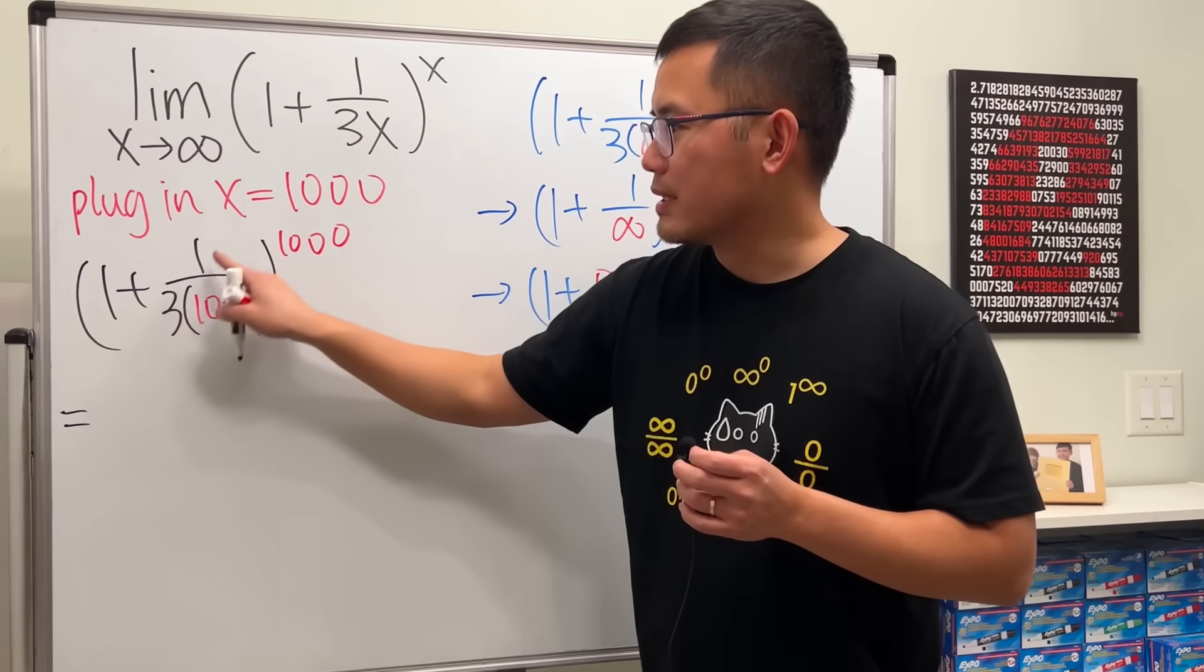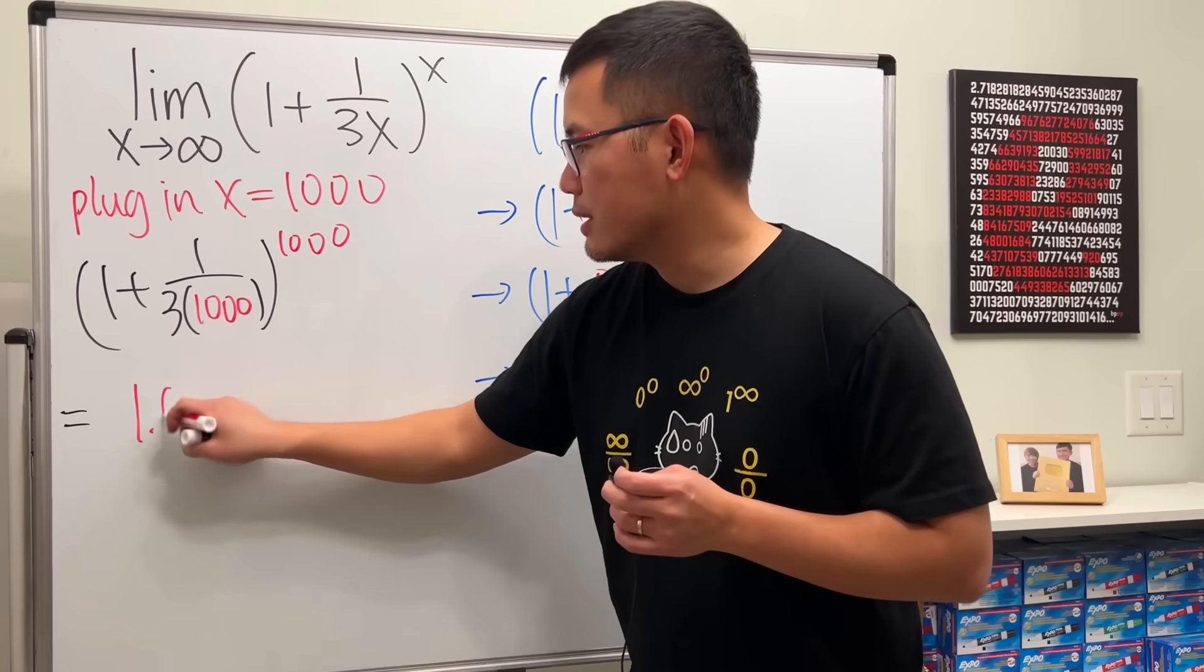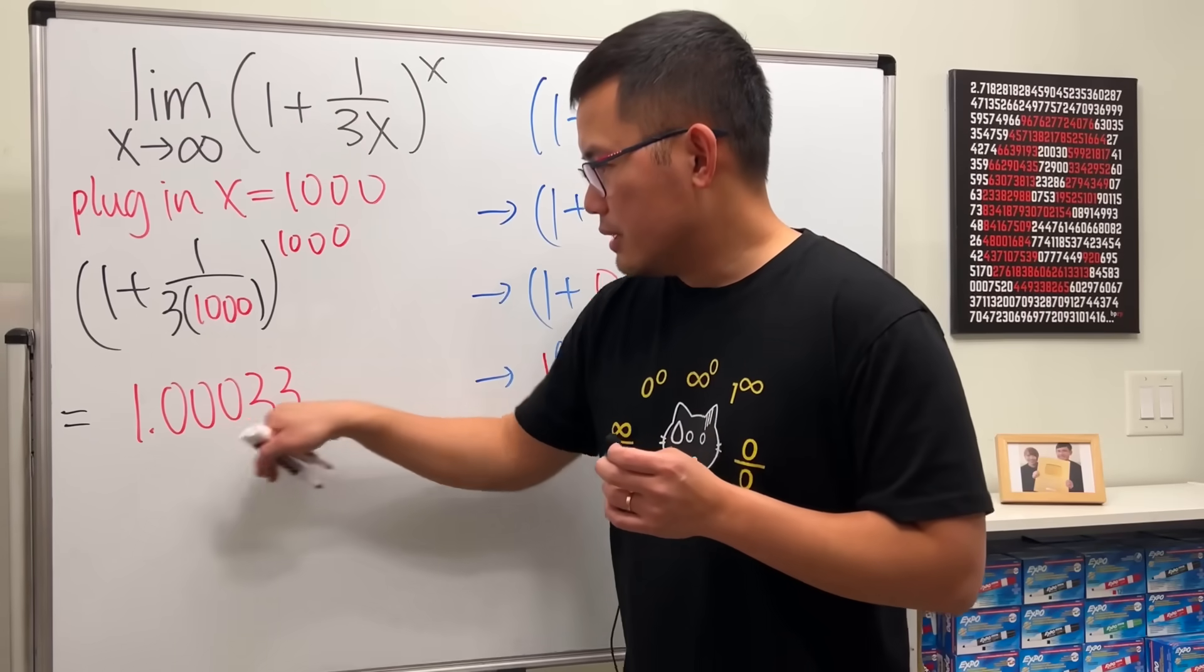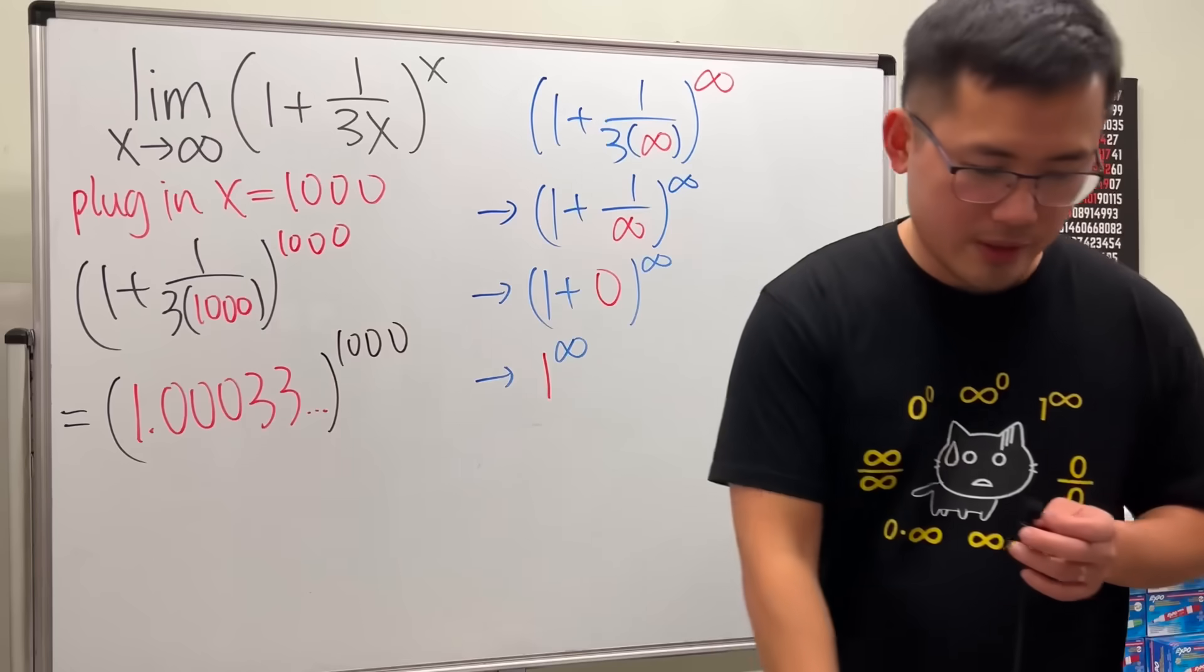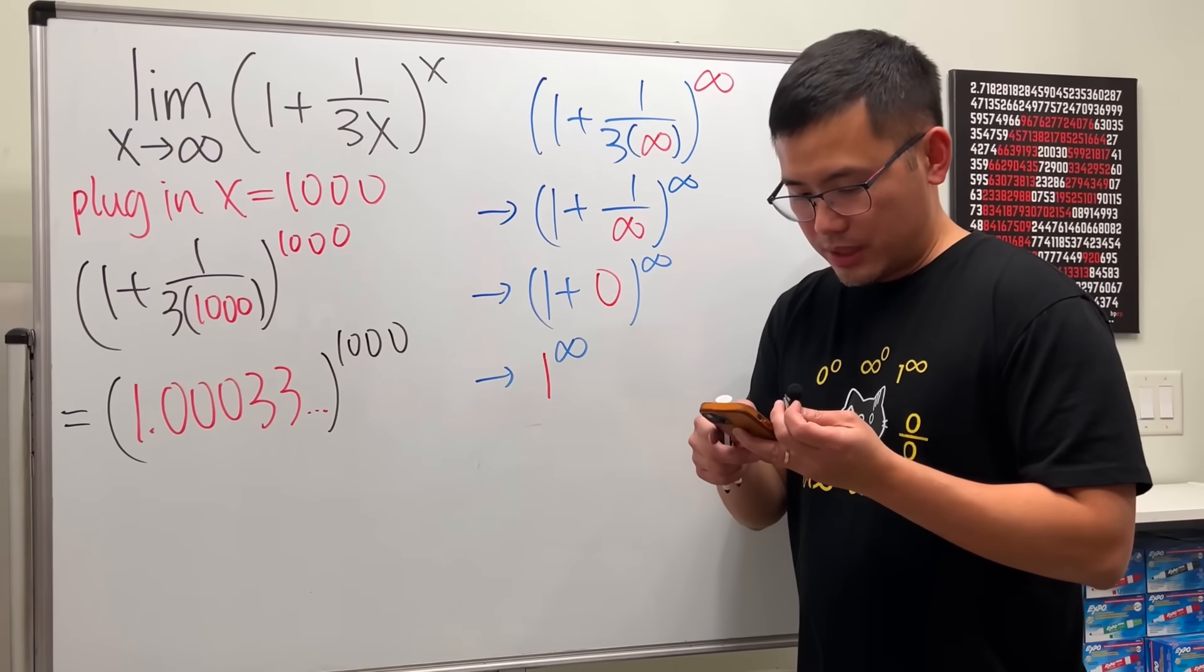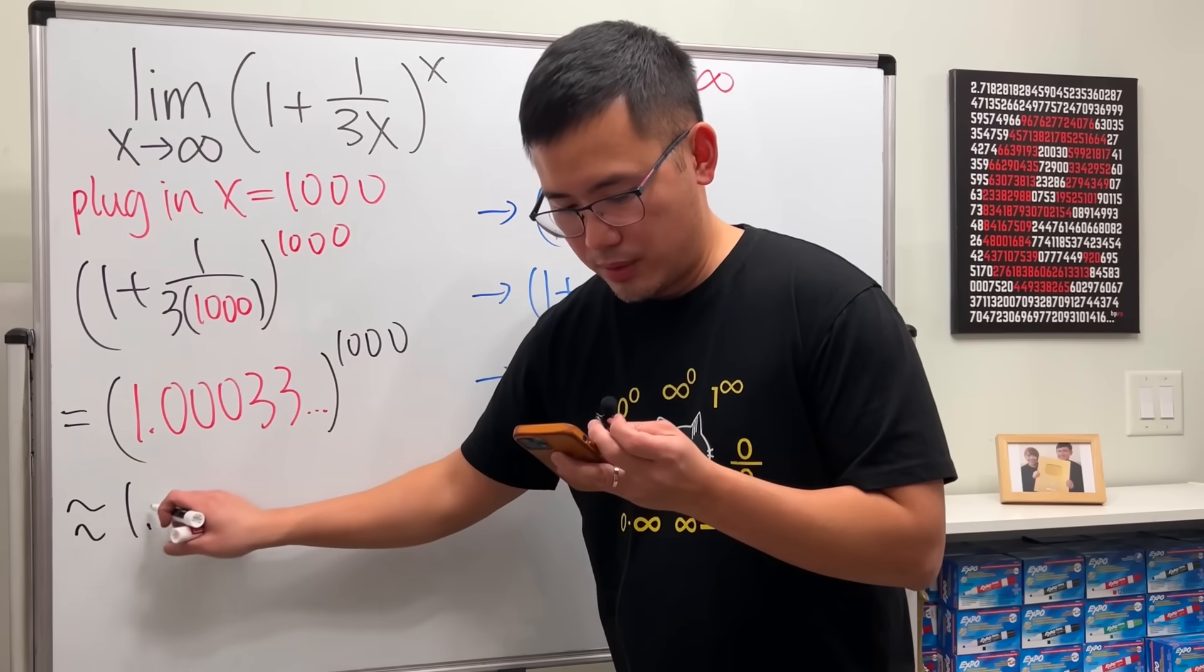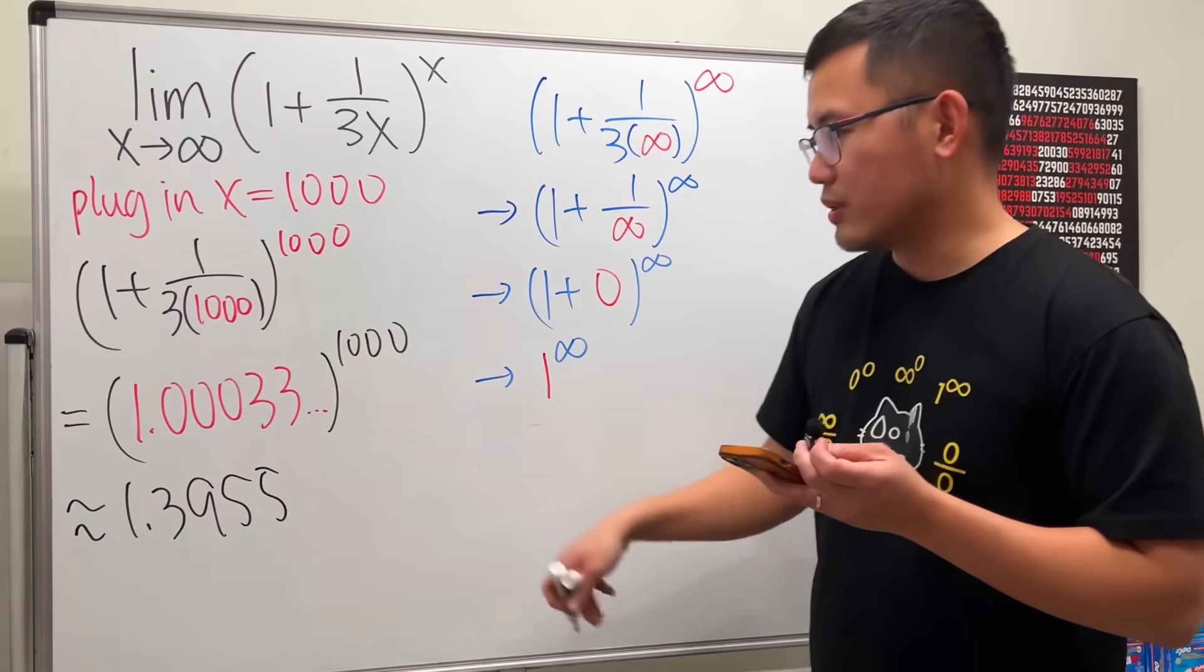Of course, this is just 1 plus 1 over 3,000. If you work that out, you get 1.0003, and then just keeps on going on forever. So this raised to the 1,000th power. And notice, if you put this on your calculator, this becomes approximately 1.3955, and so on.